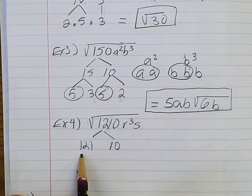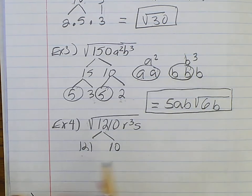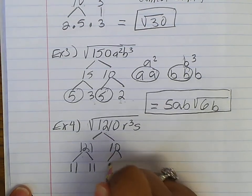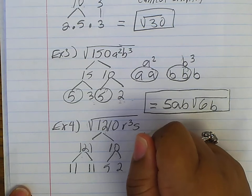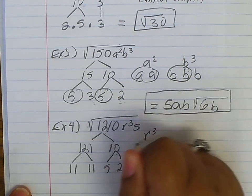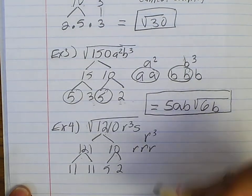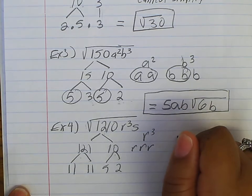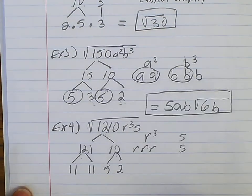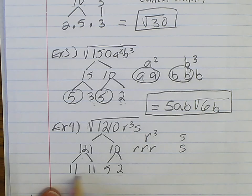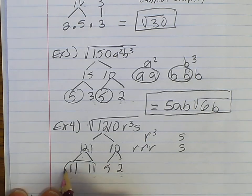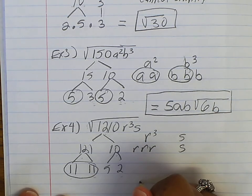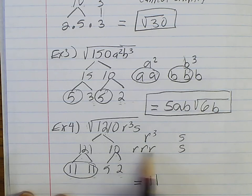I already know that 11 times 11 gives me 121, so I put two 11s. Then I break 10 down into 5 and 2. For the r's, I have three of them — sometimes you can figure out the pattern, but if not, list them all. I have one s, so I bring that down. Now checking for repeats: I have two 11s — I can circle those.